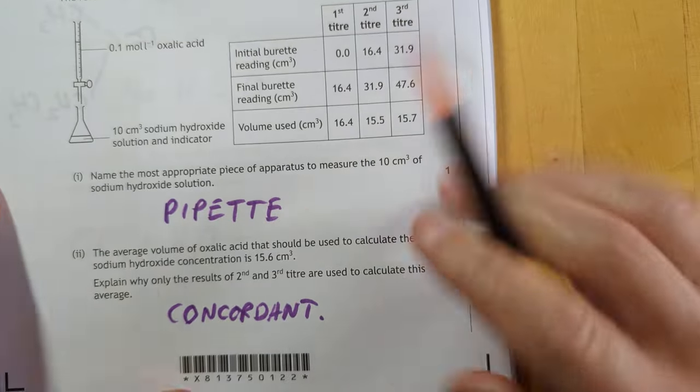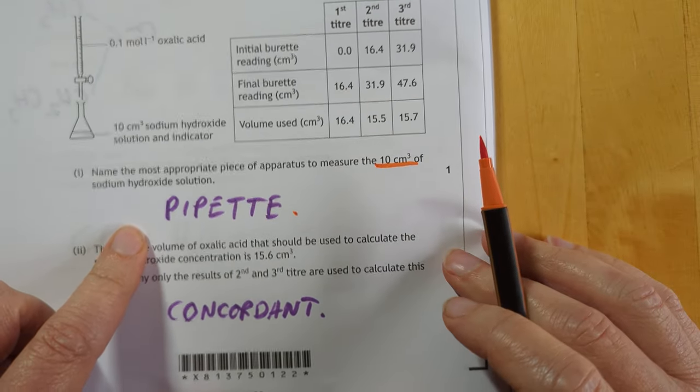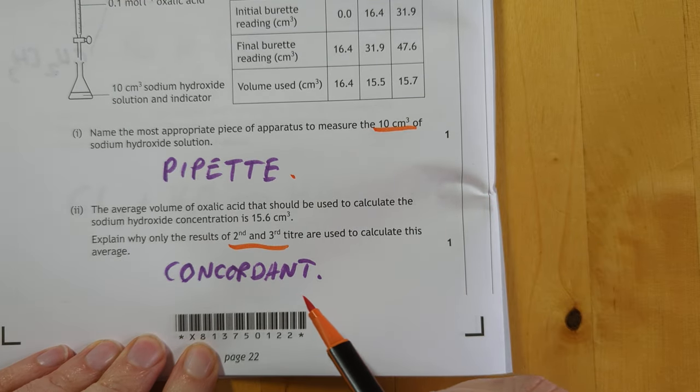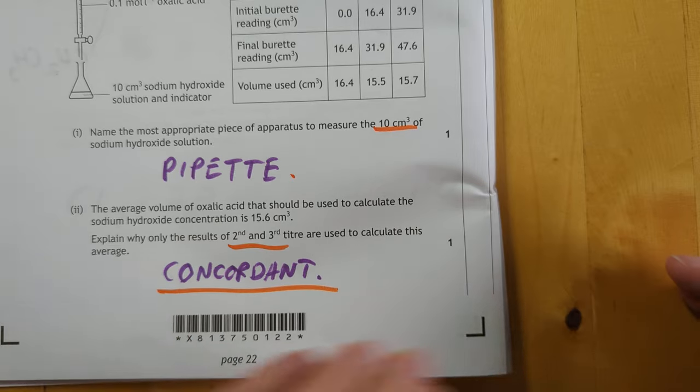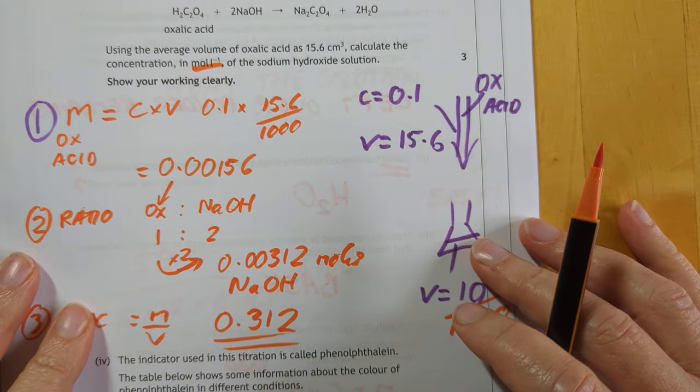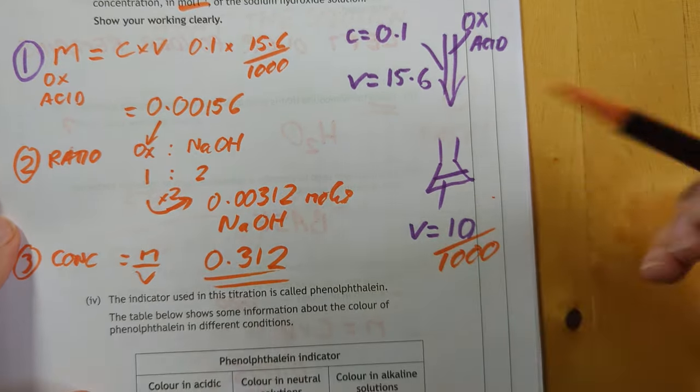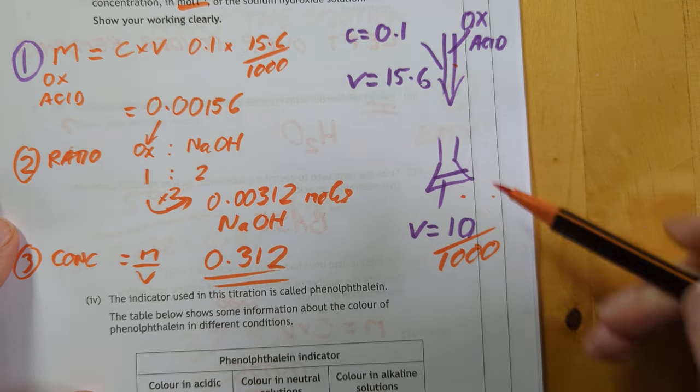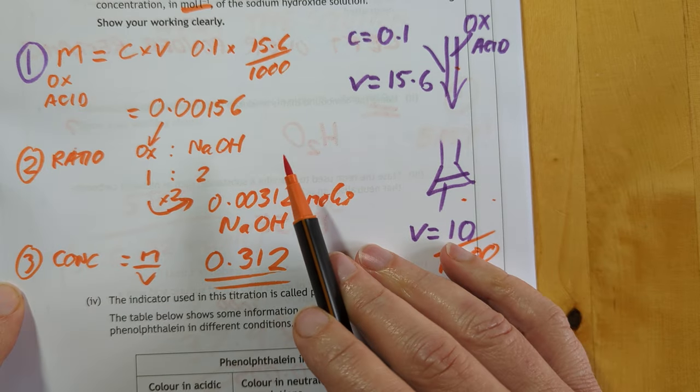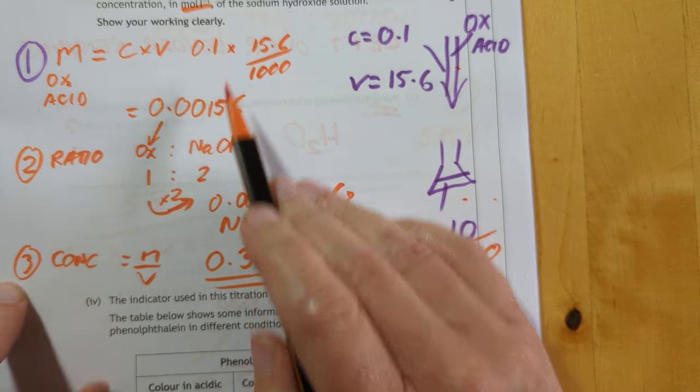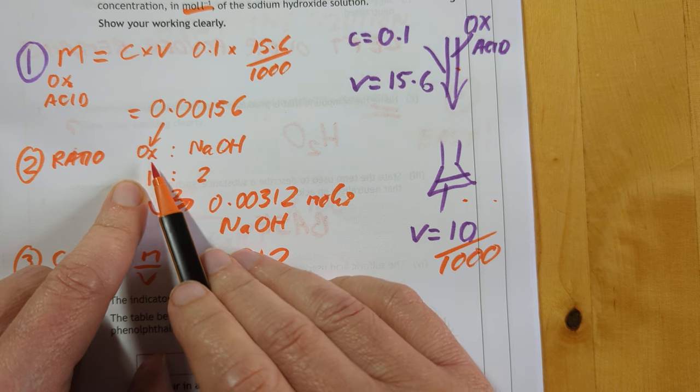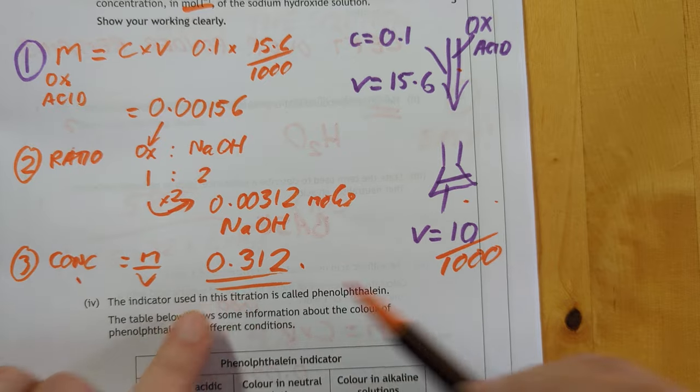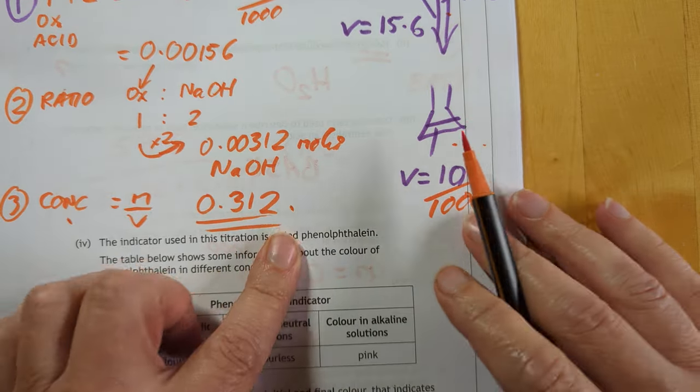Here, we're on to titration questions. A pipette is what you would use for 10 centimeters cubed in the bottom beaker. It's the most accurate way of doing it. Only results 2 and 3 are used. We chucked out result 1 because it is not concordant. Then we have the actual calculation here. I've done a wee diagram to try and figure out what's going on where. So here's your oxalic acid. Here's your sodium hydroxide, which I haven't labeled because of my mouth. But here's the three stages of the calculation. Moles of oxalic acid. Use the ratio of oxalic acid to sodium hydroxide. Gives you that number of moles of sodium hydroxide. Lastly, calculate the concentration. You end up with that. Don't put the unit in because it's in the question.